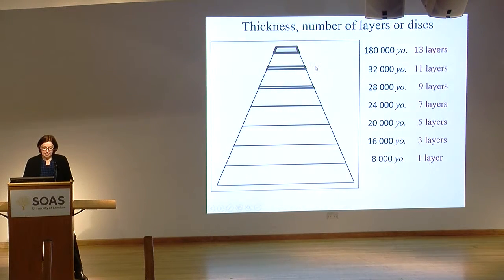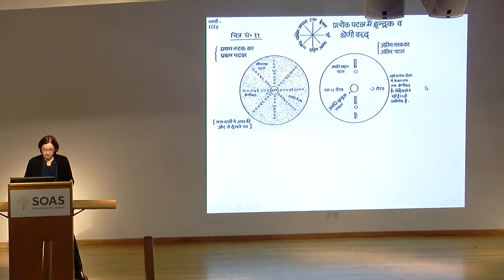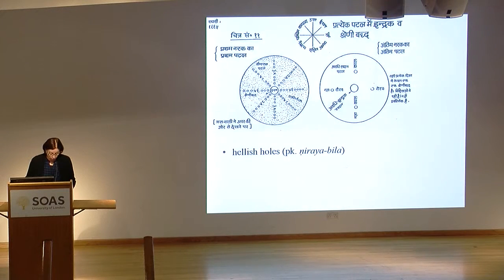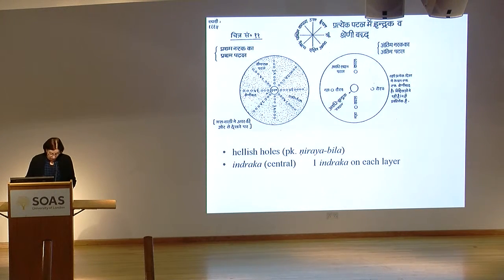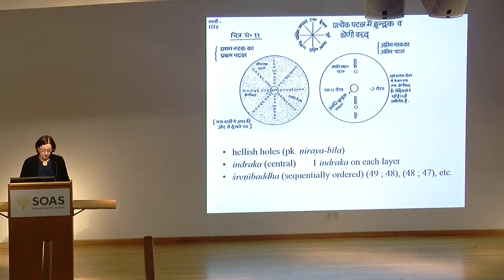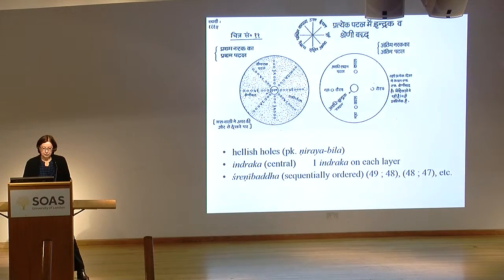What is important is that every Earth has layers, and this forms an arithmetical regression because you subtract 2 every time starting from 13. In these layers, the hellish souls live in huge holes. The first Earth has 30 lakhs of them, and the total number of holes is 84 lakhs in the hells. Each layer has one central hole — an Indraka — and some ordered or aligned holes, Shreni-baddha. There are 49 in the main directions and 48 in the sub-directions for the first layer, then minus 1 each time.